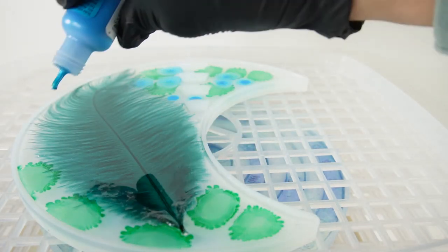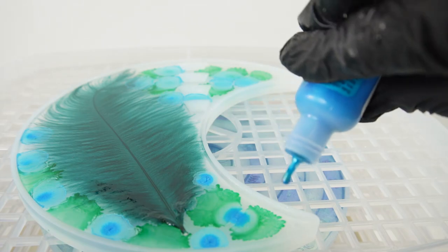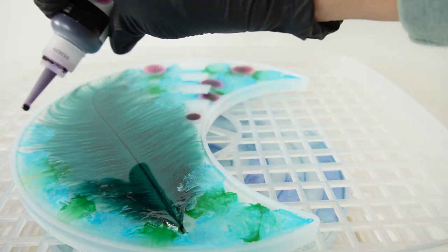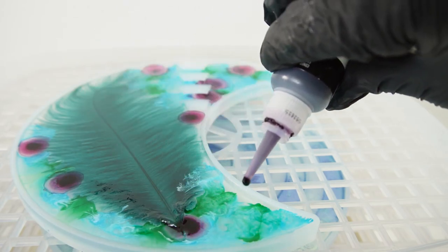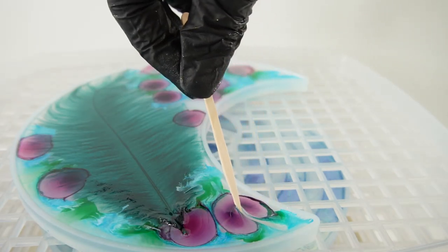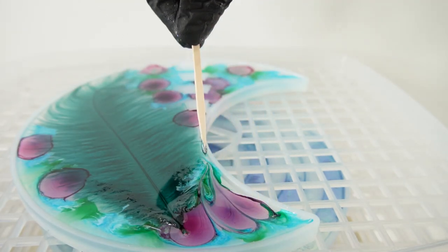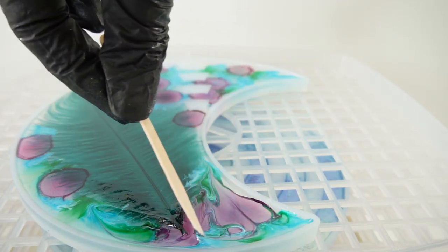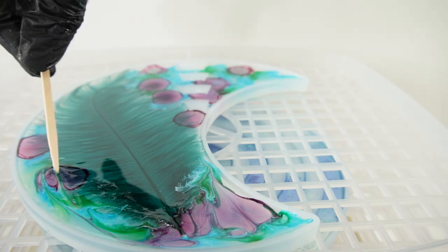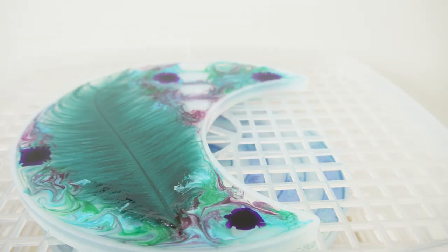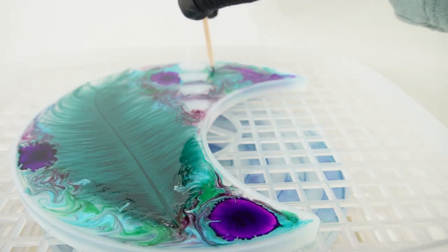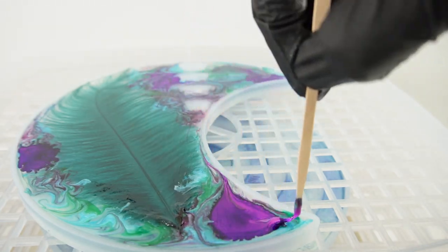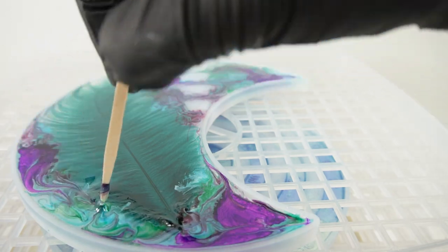So what I'm going to do is add some alcohol ink and hopefully create some colors over here to hide the background. So I'm just dropping some colors here and hopefully it doesn't become too muddied. Then I'm going to take a stick and we're going to mix the colors a little bit.